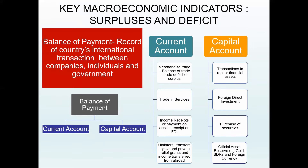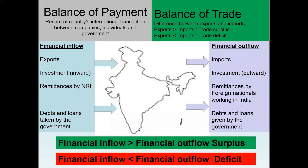Some of the indicators which can be analyzed to determine surplus and deficit of a country are balance of payment and balance of trade. Balance of trade is the difference between exports and imports. If exports are more than imports, then a country has a trade surplus, whereas if exports are less than imports, there is a trade deficit.